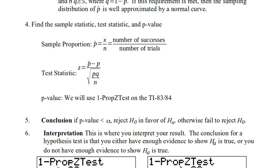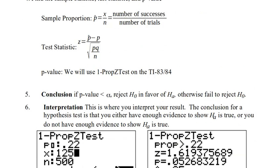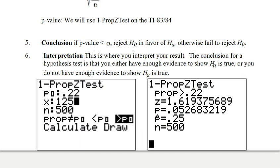The conclusion, just like before: if the p value is less than alpha, then we reject the null hypothesis in favor of the alternative hypothesis. Otherwise, we fail to reject the null hypothesis. That last step is where you state your conclusion in English. The conclusion for a hypothesis test is that you either have enough evidence to show that H sub a is true, or you do not have enough evidence to show that H sub a is true. We can get this out of a one proportion z test in our calculator.